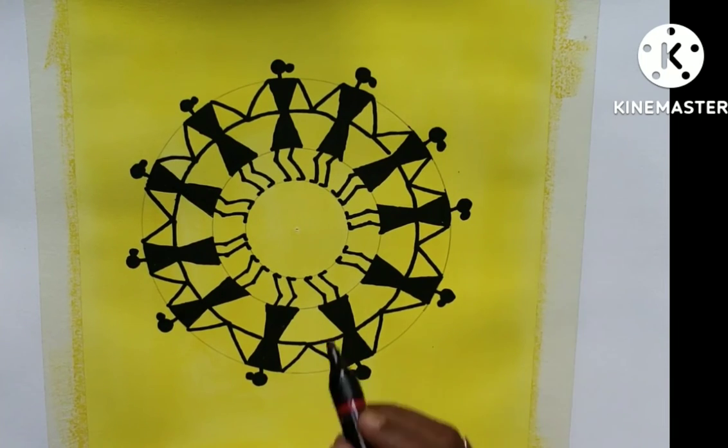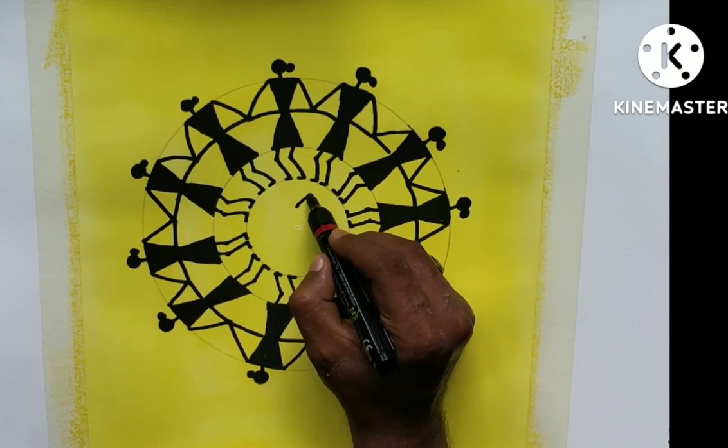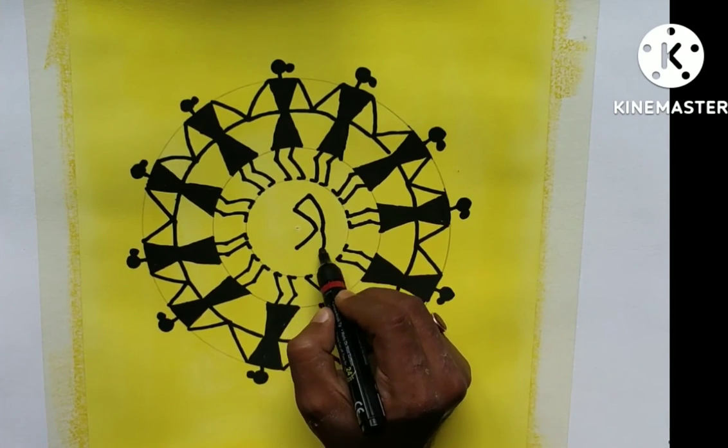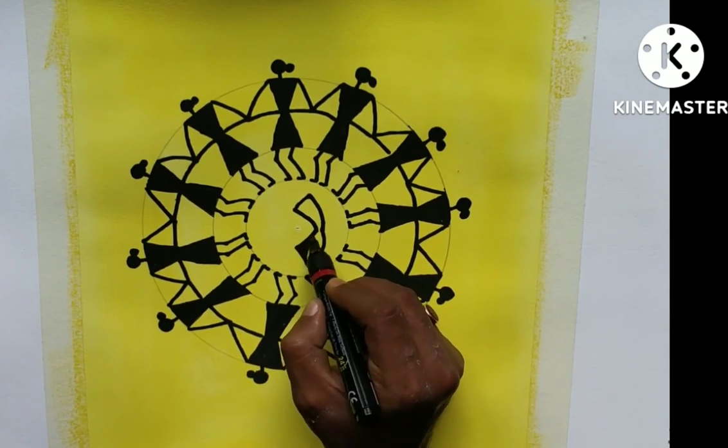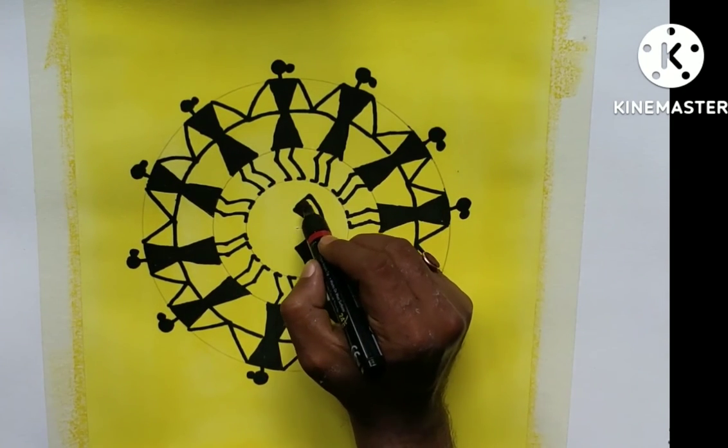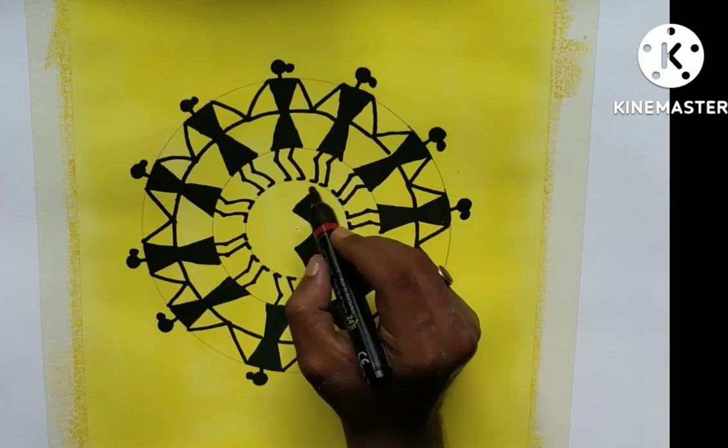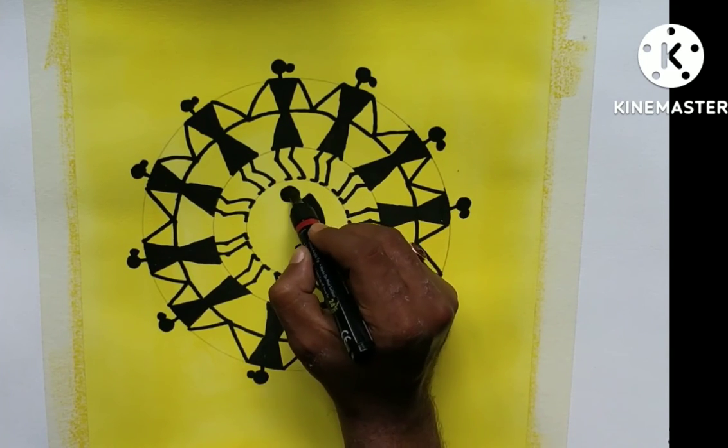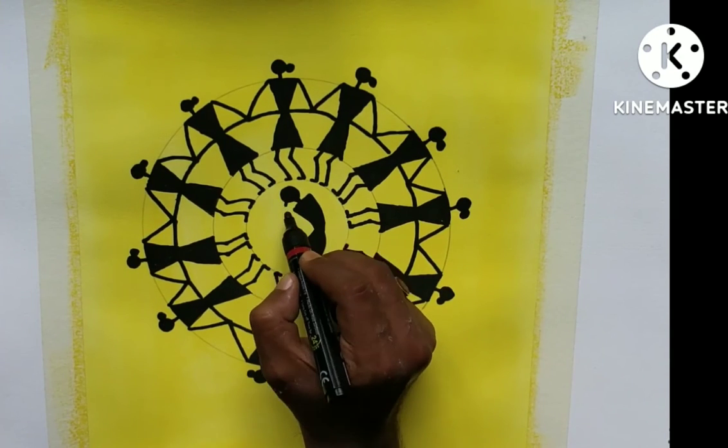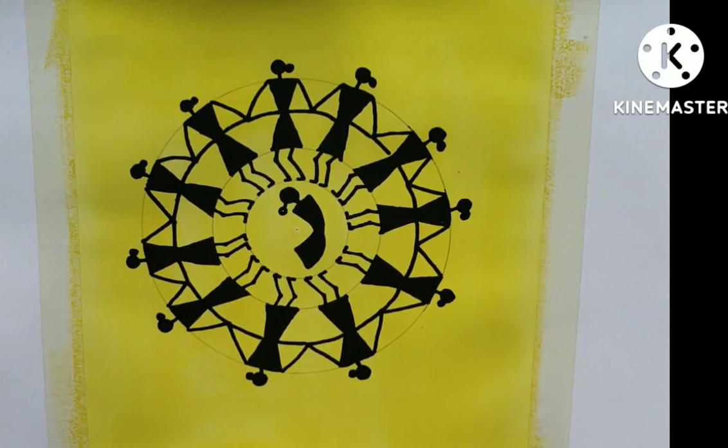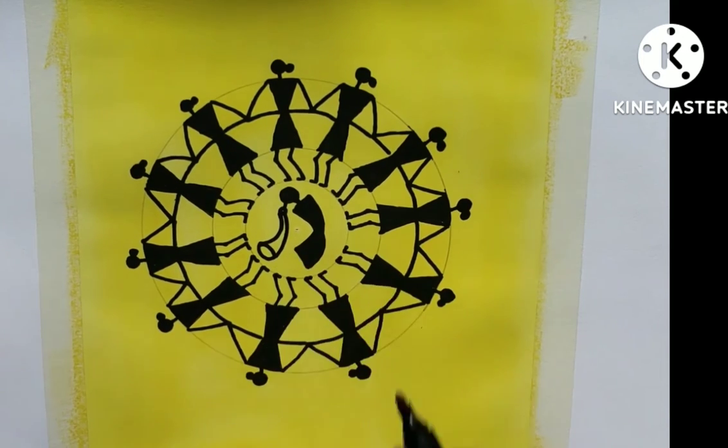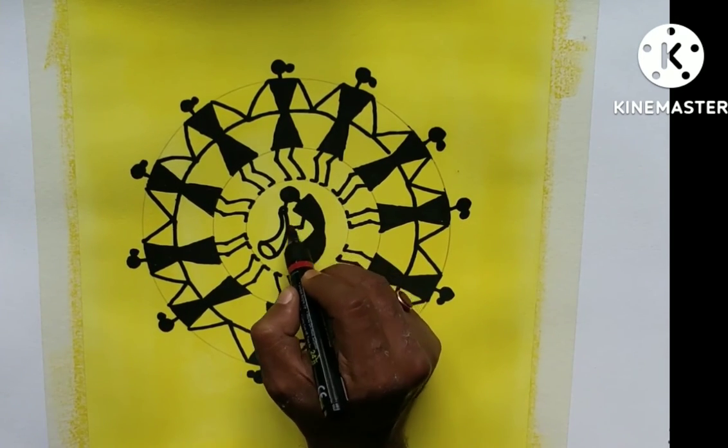And now in the middle I am drawing another figure. This is a man and this man is playing music, and this is a musical instrument.